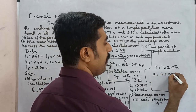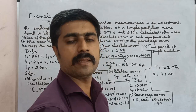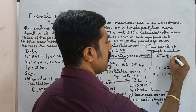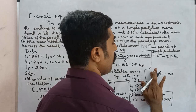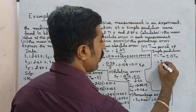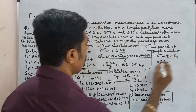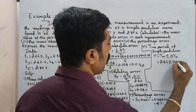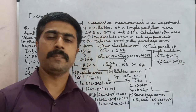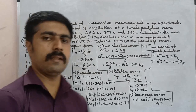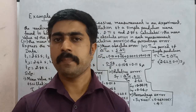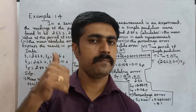So t = tm ± delta tm = 2.62 ± 0.11 seconds. That is the answer. You can practice this and you can do it. All the best, thank you.